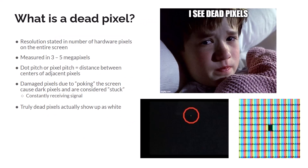Let's talk about dead pixels. When you talk about resolution for monitors, it's expressed as the total number of hardware pixels on the entire screen. In LCD monitors, the pixels are embedded in the screen itself. Putting too much pressure on an LCD monitor can damage individual pixels, causing them to display as dark, as seen in the bottom right image — they remain dark because they're constantly receiving a signal. If you have a truly dead pixel that doesn't receive a signal at all, it will show up as white, as seen in the bottom left.